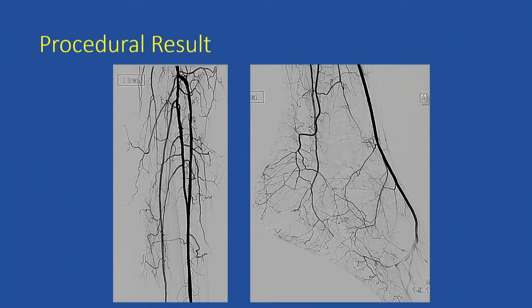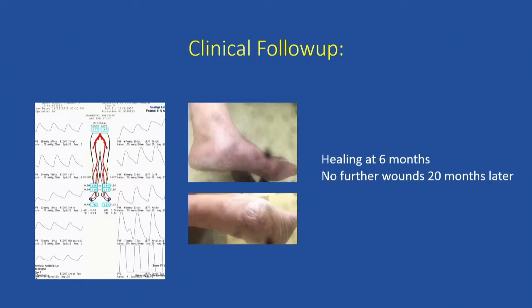This is our final result — there is now inline flow to the heel via the posterior tibial artery. At follow-up, her ankle-brachial indices improved to 0.8, toe pressure improved to 120 from 50, and she achieved complete healing of her wounds, although it did take almost six months. We now have 20 months of follow-up and she has not had any recurrence of critical limb ischemia.